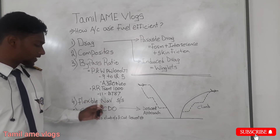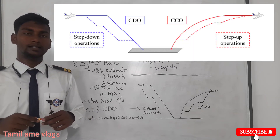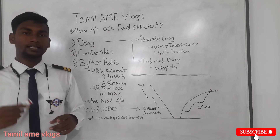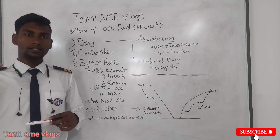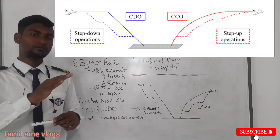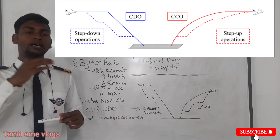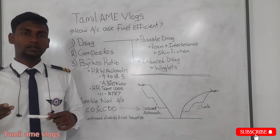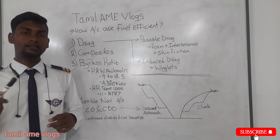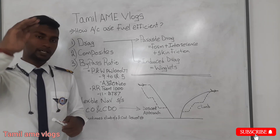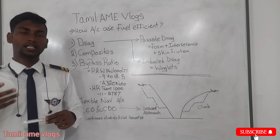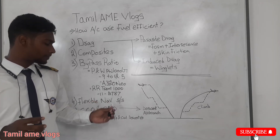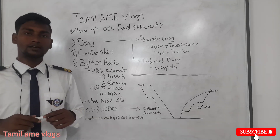The last reason is CCO and CDO — Continuous Climb Operation and Continuous Descent Operation. In earlier days, after takeoff an aircraft would climb to its service ceiling in steps, consuming more fuel and time. With CCO, the aircraft climbs continuously to its service ceiling, saving more fuel and improving fuel efficiency. Similarly, CDO applies the same principle during descent — a continuous descent rather than a stepped one. These are all the reasons for aircraft to be fuel efficient.